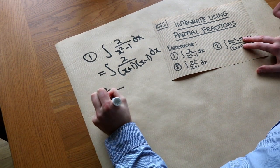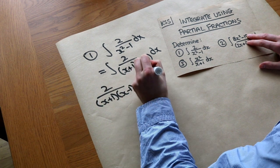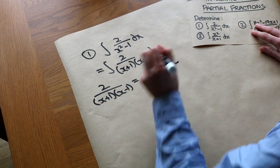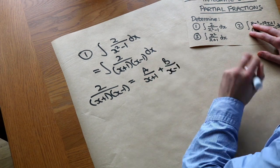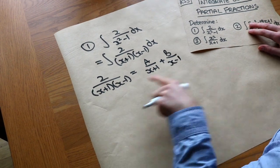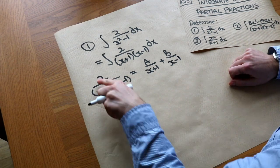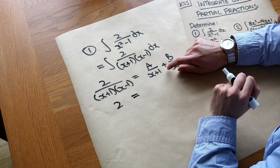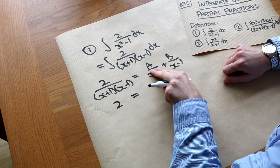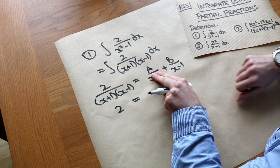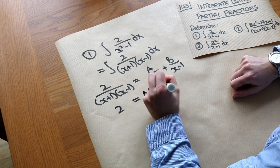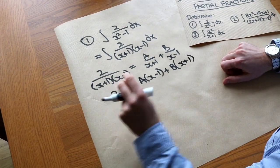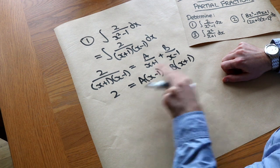We've got 2 over (x+1)(x-1) and that can be written as some constant A over the first thing in the denominator, plus B over the second thing in the denominator. Then, as we saw in the partial fractions video, we can multiply both sides by (x+1) and (x-1). Multiplying by that on the left-hand side we just have 2.